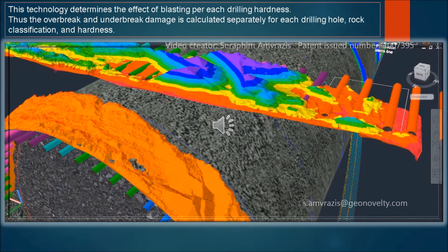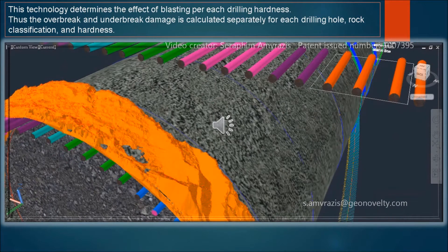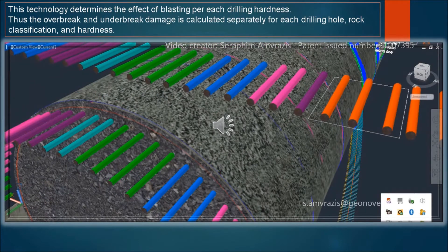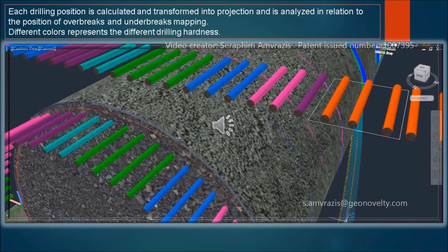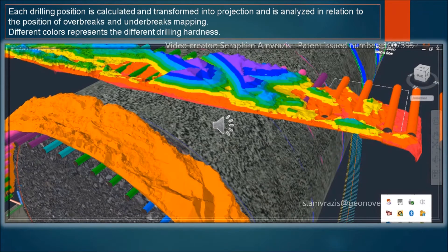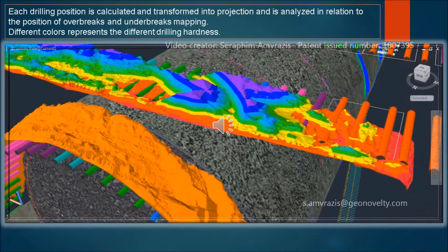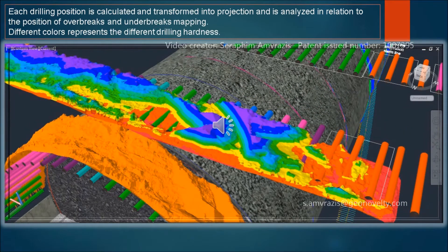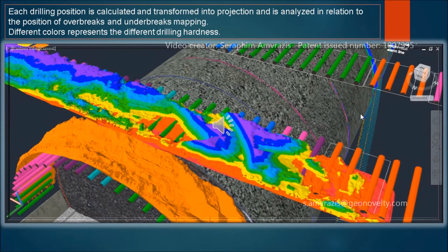This technology determines the effect of blasting per each drilling hardness. The overbreaks and underbreaks damage is calculated separately for each drilling hole, rock classification, and hardness. Each drilling position is calculated and transformed into a projection, and is analyzed in relation to the position of the overbreaks and underbreaks mapping. Different colors represent the different drilling hardness.